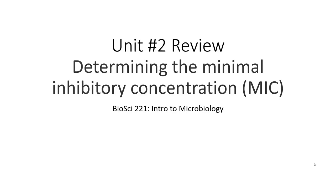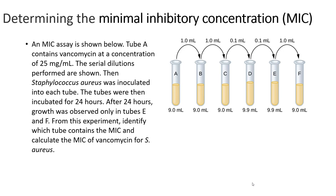Hi everybody, this is Dr. Ramey. Let's talk about how to determine the minimal inhibitory concentration, or MIC. In this problem, there's going to be a serial dilution done to set up this assay, where in tube A there's 25 mg per mL of vancomycin. A serial dilution is then made in tubes B through F, so the concentration of vancomycin is going to decrease in each of those tubes.